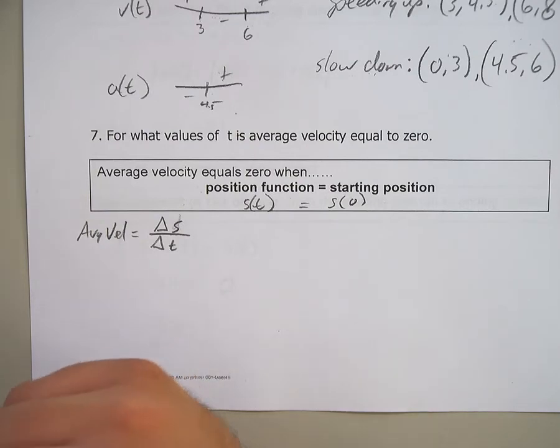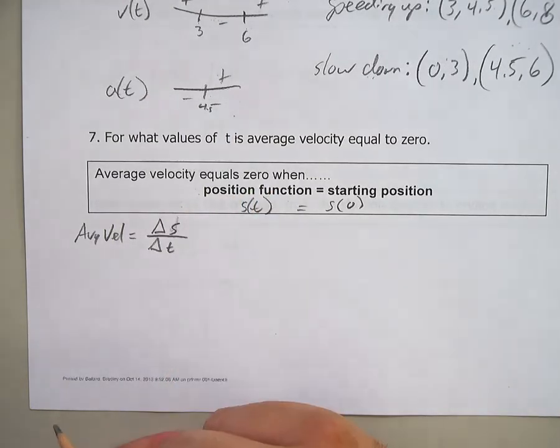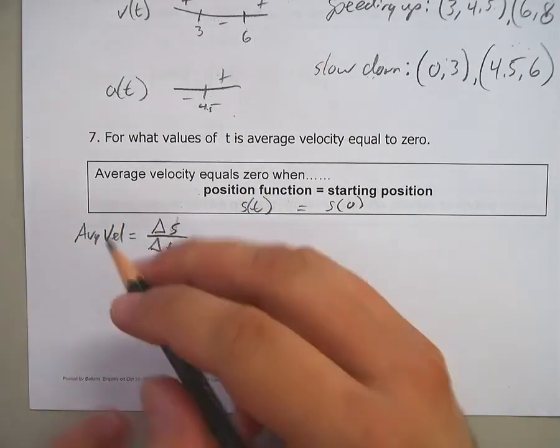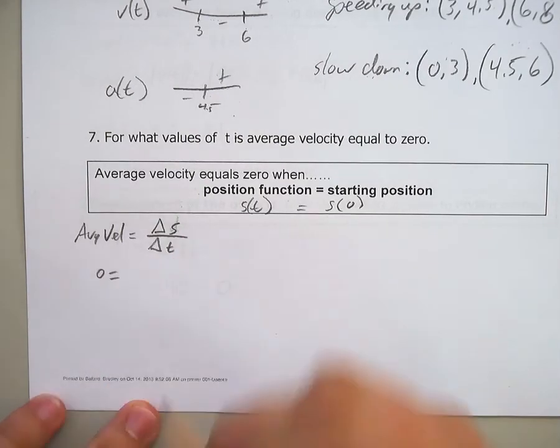All right. Now really, really, really think about this. You're trying to find out when your average velocity equals zero, right? So here's the formula for average velocity. Let's set it to zero.